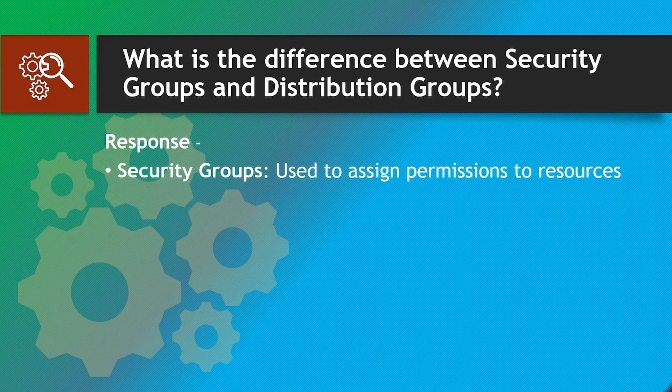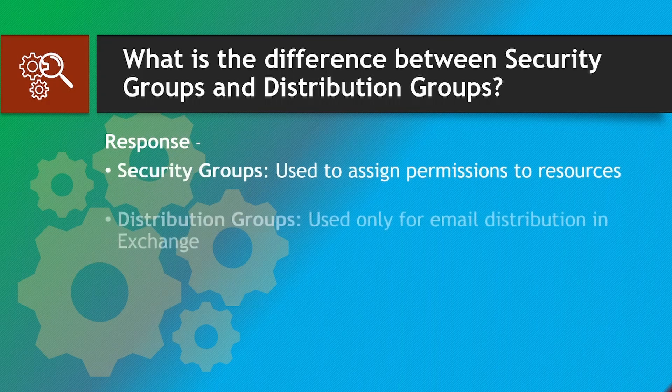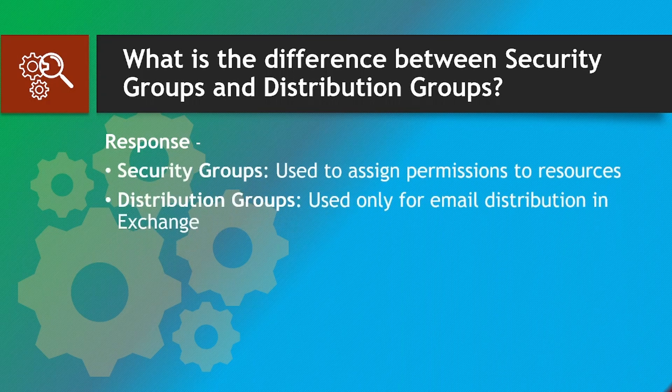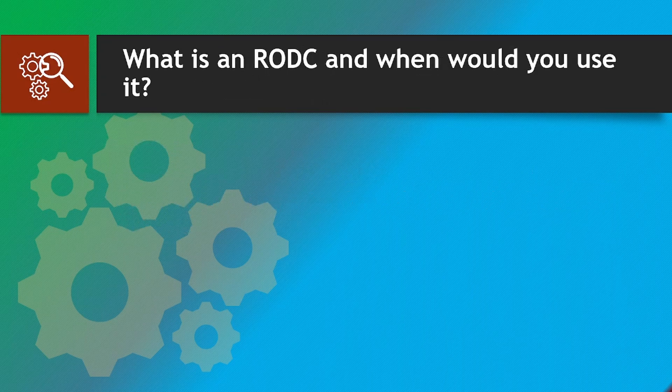What is the difference between security groups and distribution groups? Response: Security groups are used to assign permissions to resources. Distribution groups are used only for email distribution in Exchange.